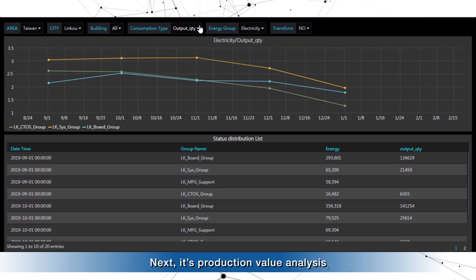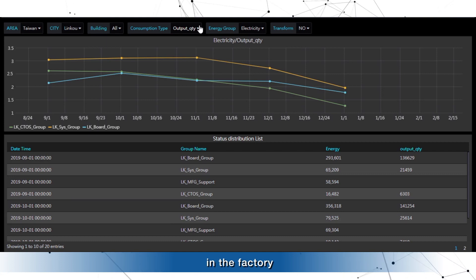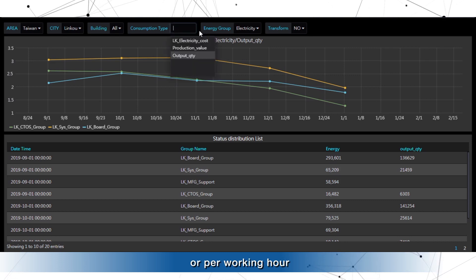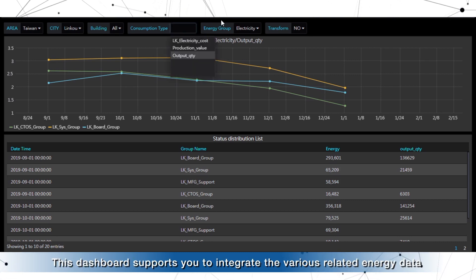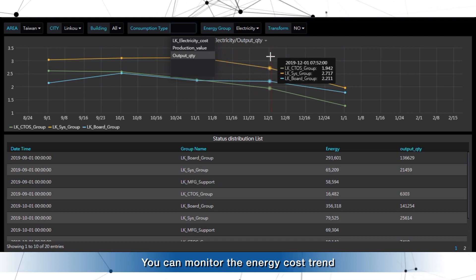Next, it's Production Value Analysis. Production usage is usually the main consumption part in the factory. You can evaluate performance by energy cost per unit or per working hour. This dashboard supports integrating various related energy data with MES or ERP. You can monitor the energy cost trend to review production efficiency.